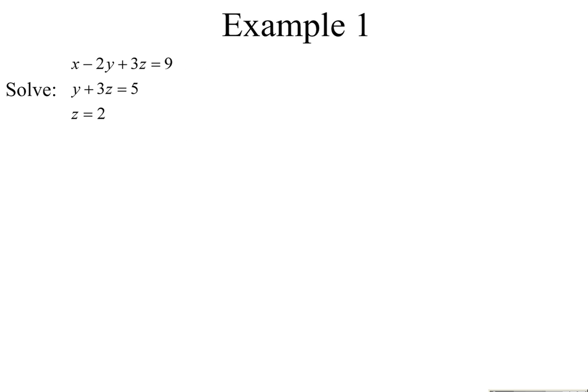Looking at this first system, our third equation is already telling us what z is equal to. In this situation, we can simply back-substitute. If z is equal to two, plug into the second equation: y plus three times two equals five, and finish solving for y. We get y to be negative one.